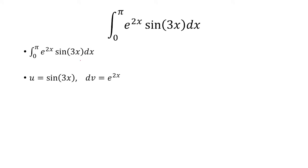Let u be sine 3x, and let dv be e to the 2x dx. So now the derivative of u is 3 cosine 3x, and the antiderivative of e to the 2x is e to the 2x over 2.